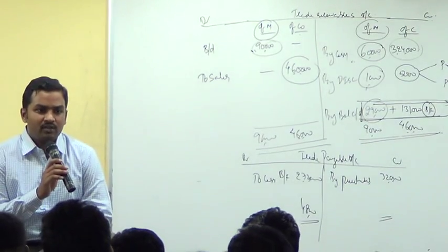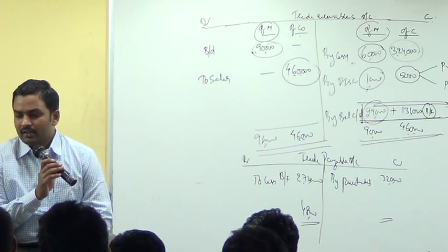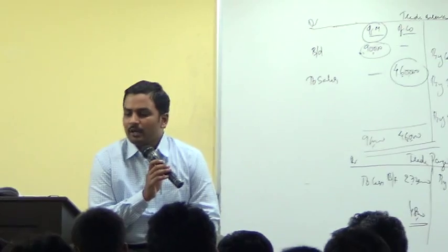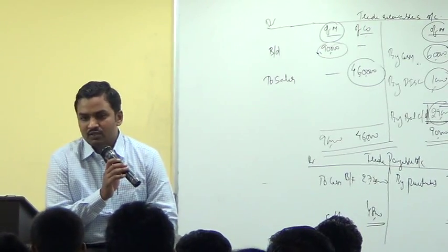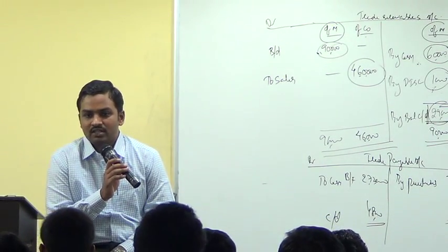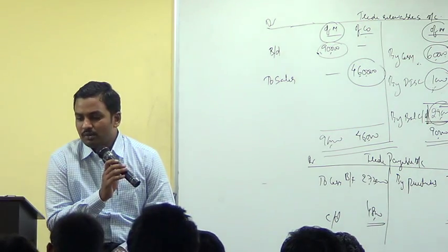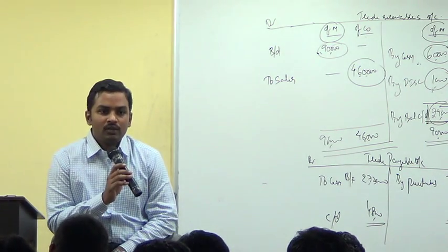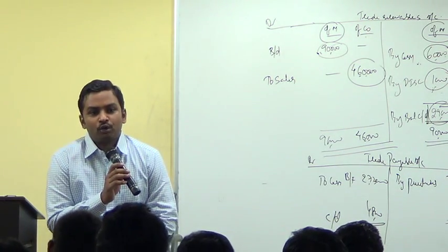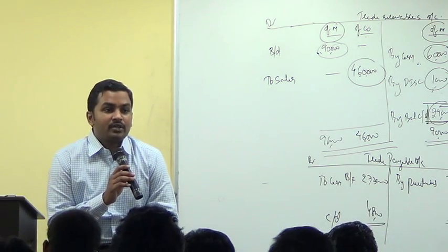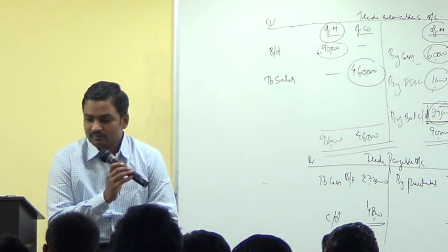By passing of an ordinary resolution, the company should not have defaulted in payment of interest, principal on fixed deposits, debt security, etc. And before you issue bonus shares, partly paid up shares have to be converted into fully paid up shares.